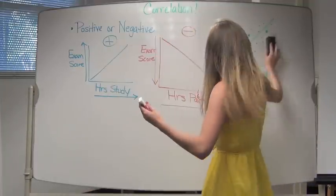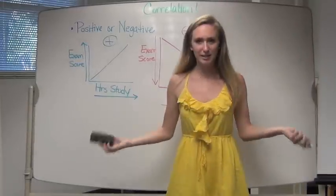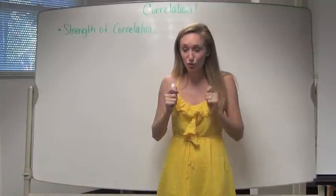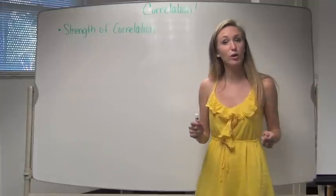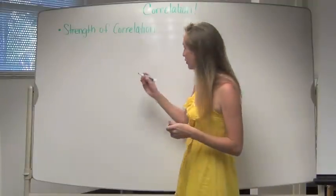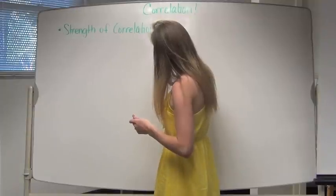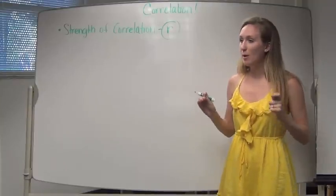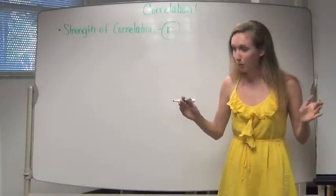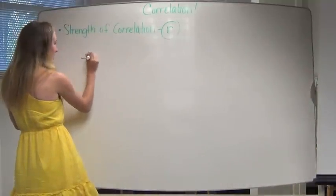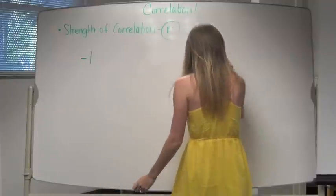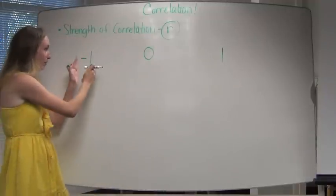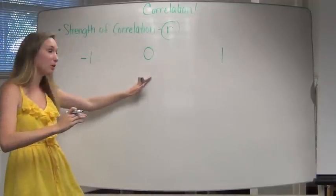How can we measure how strong or weak a correlation is? The way we measure the strength of a correlation is through something called the correlation coefficient, denoted as a little r. The things we need to know about r is that it is a numerical value that can range all the way from negative 1 to positive 1, with zero in the middle. It's going to be either a perfect negative 1, a perfect positive 1, or some kind of decimal in between.